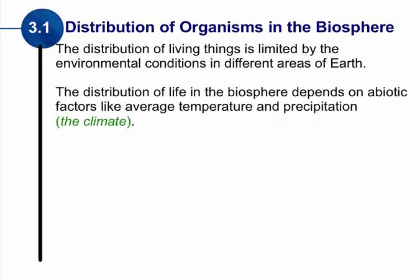When we're talking about this distribution, it is the abiotic factors — the non-living factors of that environment, such as temperature and precipitation, also known as the climate, that affect the distribution of life.